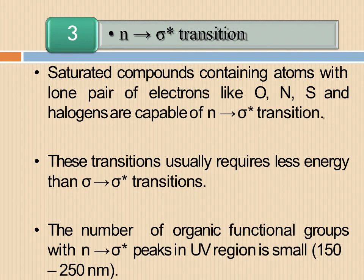The third one is n to sigma star. Those saturated compounds in which groups having atoms with non-bonding electrons are bound with a single bond show n to sigma star transition. Generally, oxygen, nitrogen, sulfur, and halogens are the atoms possessing non-bonding electrons. Less energy is required for n to sigma star transition than sigma to sigma star.